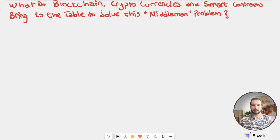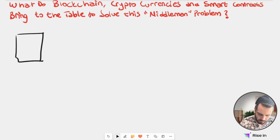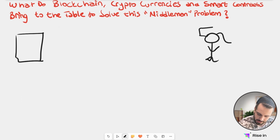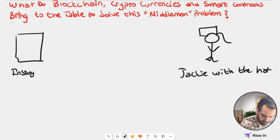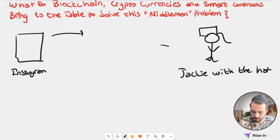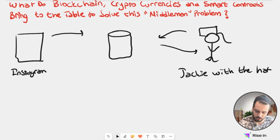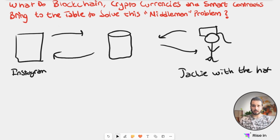We said that we need a middleman to communicate with this dynamic web. We also said that this was our website, and this was Jackie here, and Jackie had a hat. And this was Instagram. So let's keep the same example. And we said that we were communicating through this server here, and this was actually the closest Facebook server to us, so it can be faster. So this is the general idea as we talked before.